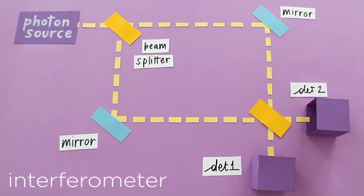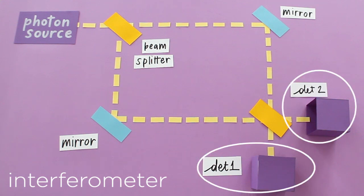An interferometer is an optical system made of two beam splitters, which are 50-50 semi-reflective mirrors, two mirrors and two photodetectors.